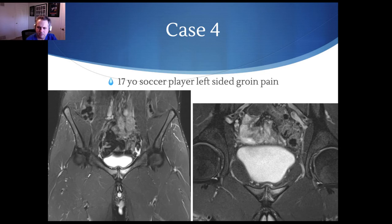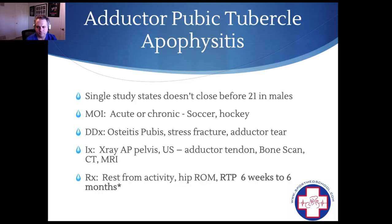Case number four: a 17-year-old soccer player with left-side groin pain. You can see the bony edema. This was actually a pubic tubercle apophysitis from traction of the adductor longus, and this can stay open well into their 20s. It's common in soccer but also in hockey. Other injuries in this area include osteitis pubis, stress fractures of the pubic or ischioramus, and adductor tears.